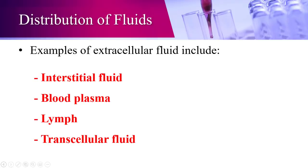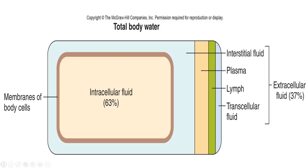Transcellular fluid includes things like cerebrospinal fluid and synovial fluid found between various joints — all examples of fluid found outside of cells. Take note of what is and is not an example of extracellular fluid. Intracellular fluid is about 63%, and the rest is extracellular fluid, which can be broken down into interstitial fluid, blood plasma, lymph, and transcellular fluid.